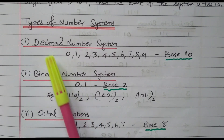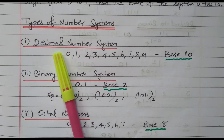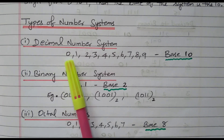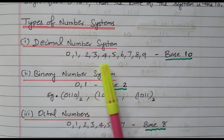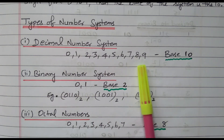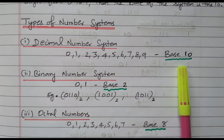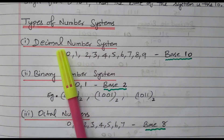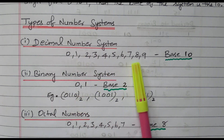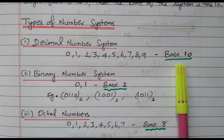The first one is the decimal number system. Normally what we use in day-to-day life: 0, 1, 2, 3, 4, 5, 6, 7, 8, and 9. Totally 10 numbers are available, so the base is 10. The decimal number has 10 different numbers, so it is represented by base 10.